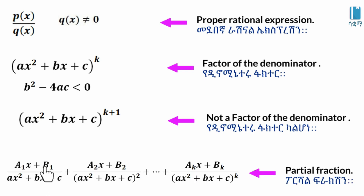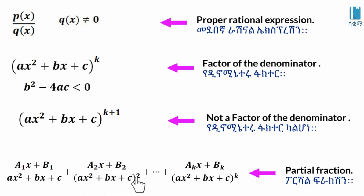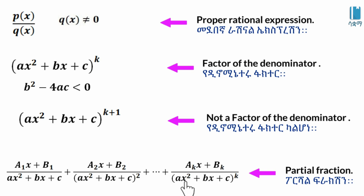The partial fraction decomposition takes the form: A1x plus B1 over (x² + bx + c), plus A2x plus B2 over (x² + bx + c) squared, and so on up to Akx plus Bk over (x² + bx + c) to the power of k.